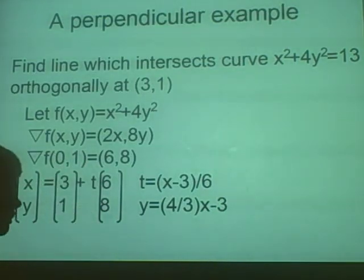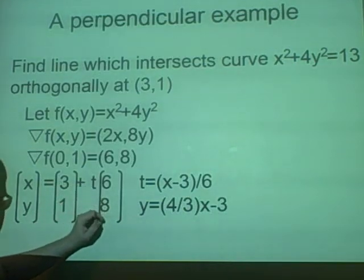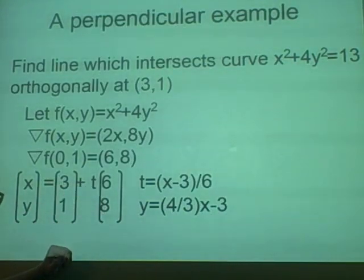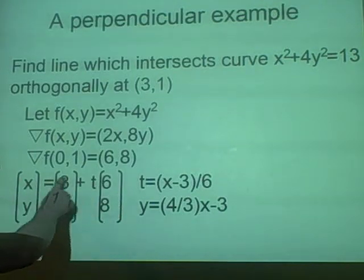Now next we want to do is we want to get rid of the t's. We don't like other variables in there. So we let them... With these equals... So x=3+6t and y=1+8t. We get the t from this one.